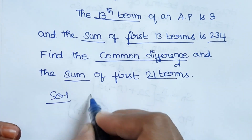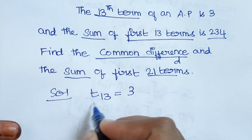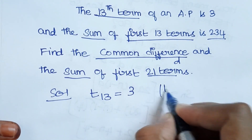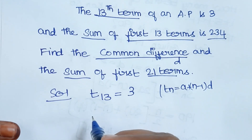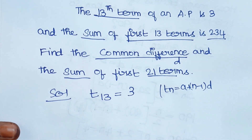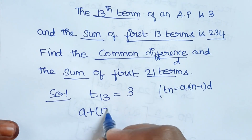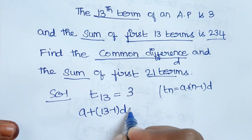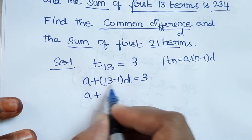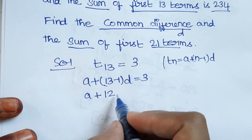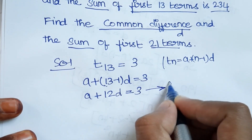In the solution, T(13) = 3. Using the T(N) formula: A + (N−1)D, substituting N=13 gives A + 12D = 3. This is the first equation.